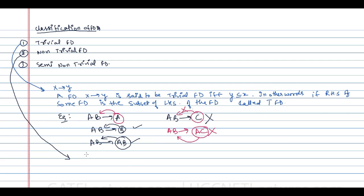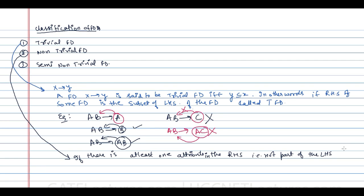The next type is the non-trivial functional dependency. Non-trivial is kind of opposite to trivial — if a functional dependency is not trivial, then it is non-trivial. More precisely, if there is at least one attribute in the right-hand side that is not part of the left-hand side, then such a functional dependency is called a non-trivial functional dependency.